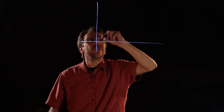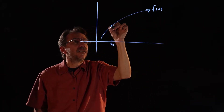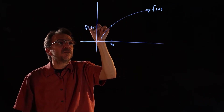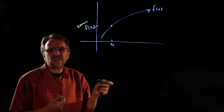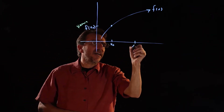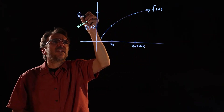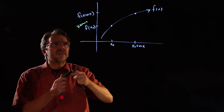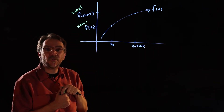Now I'm going to explain where that formula comes from. For the local linear approximation, say we have a function f of x and a known value x naught. The corresponding y value is f of x naught, which is known — that corresponds to the square root of 64 in the last example. Then x naught plus delta x is what we want, corresponding to the square root of 65.